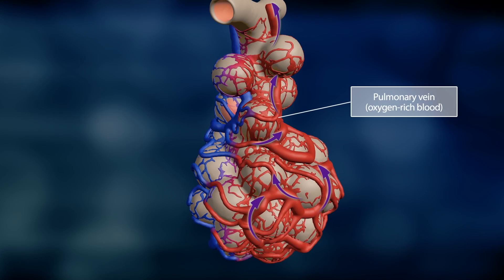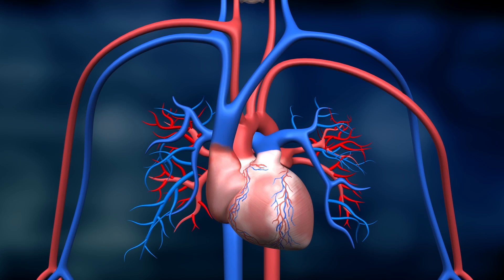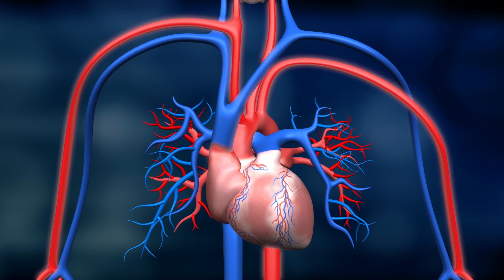Meanwhile, the oxygen rich blood flows back to the heart through the pulmonary veins. The heart then pumps the blood to the rest of the body through the systemic circuit, supplying all organs with oxygen.